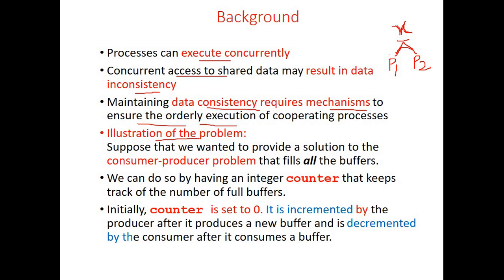Let us examine process synchronization with the producer-consumer problem. In this problem, the producer and consumer processes make use of a common variable called counter. This counter is initially 0. The producer always increments the counter variable when it produces data into the buffer, and the consumer always decrements the counter variable when it consumes data from the buffer.